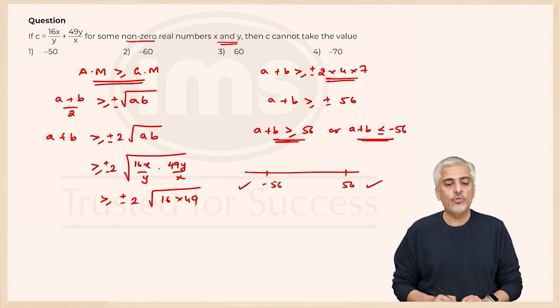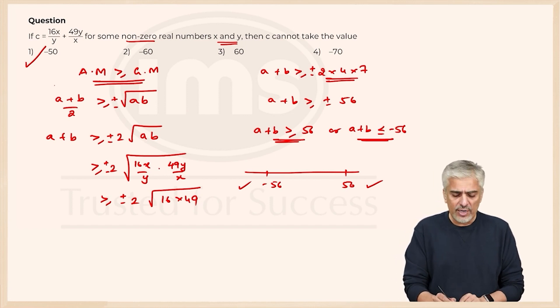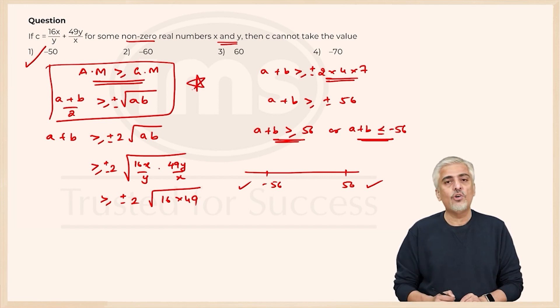From the options I can clearly see that the first option minus 50 will not satisfy this range, and hence the answer is minus 50. Very straightforward method. You would have done ample questions using this property, so you should have got this.